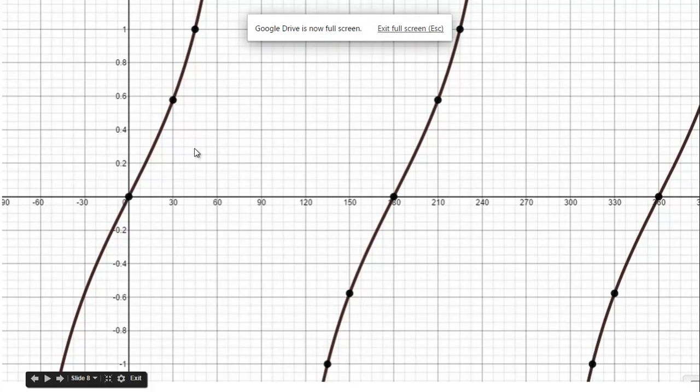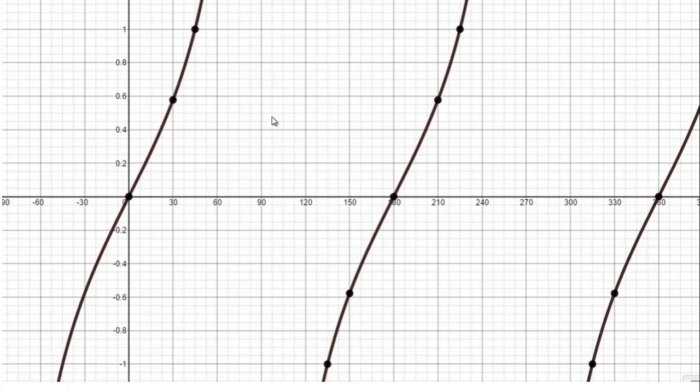But what happens is as you continue to go, you can see that 90 is actually an asymptote. There's an error at 90. And so what's going to happen is the graph is going to approach 90, it's going to approach 270, it's going to go to infinity. And then it's going to approach 90 from the left to negative infinity, 270 to negative infinity.